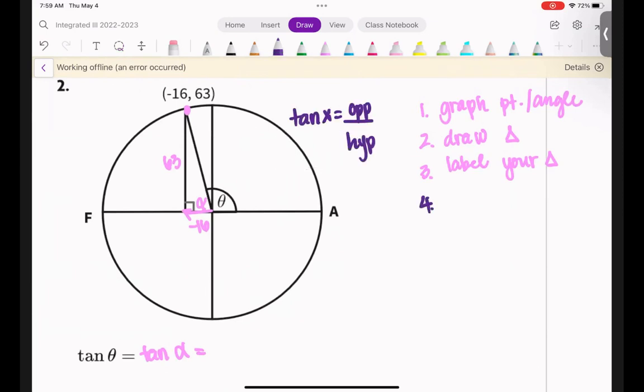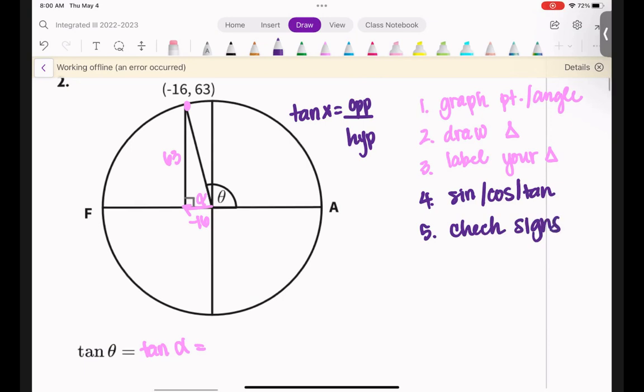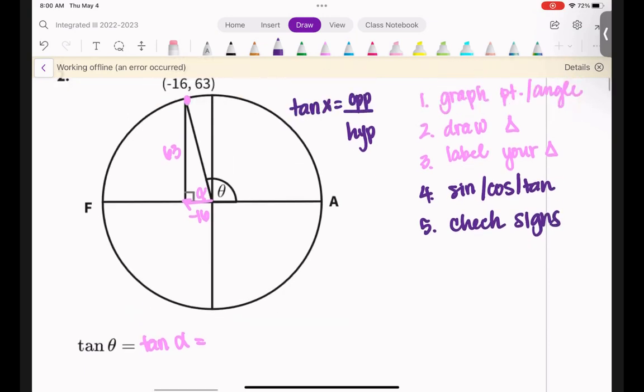After you label your triangle, then you find whatever sine, cosine, or tangent. And then the fifth one is check your signs. So the tangent in this case is going to be 63 opposite over adjacent, which is negative 16. So here's your answer.